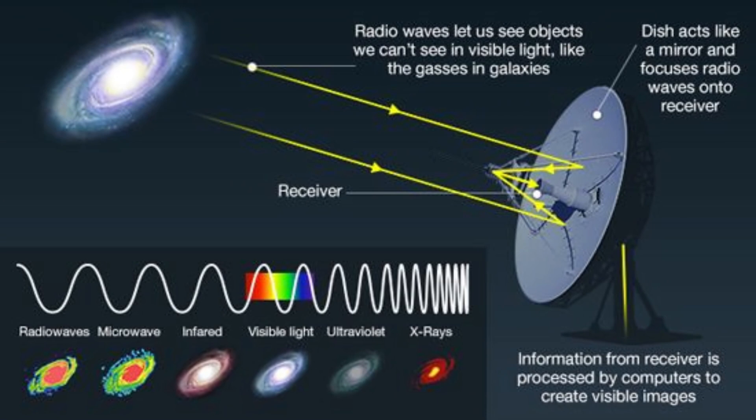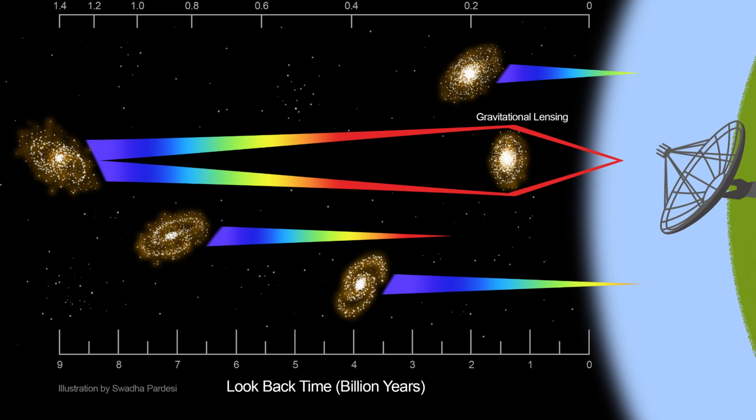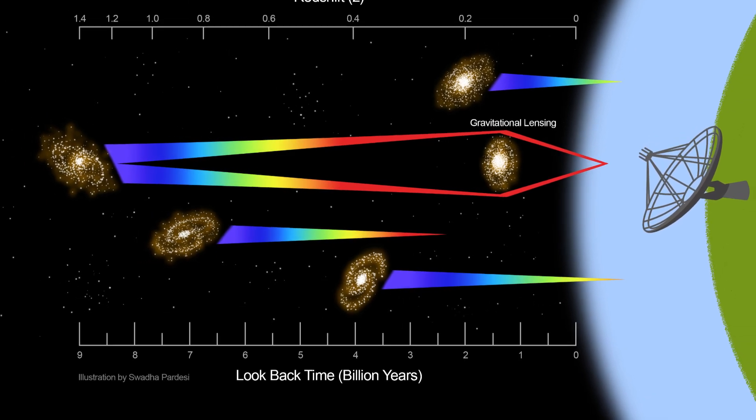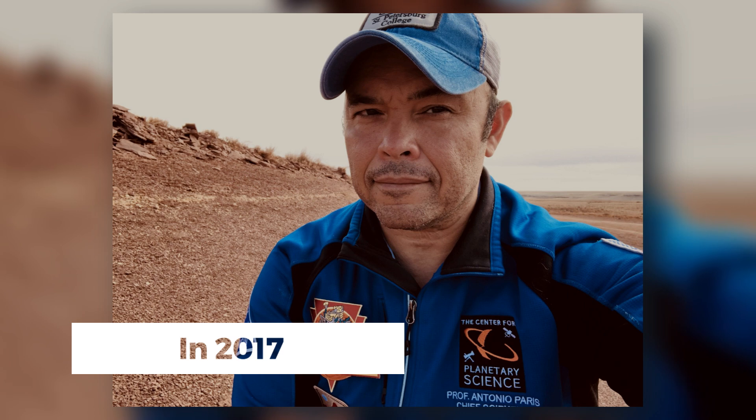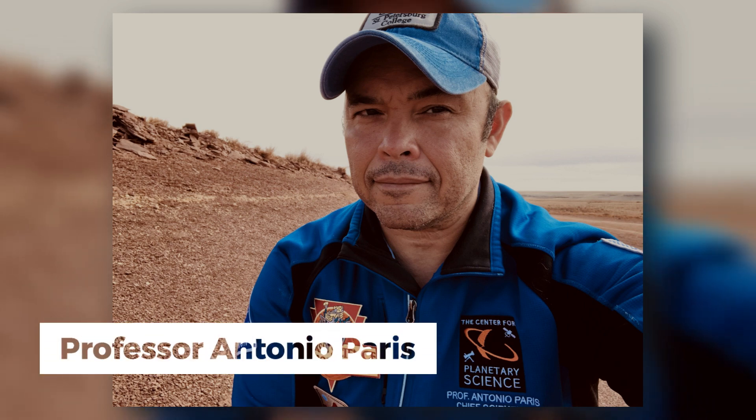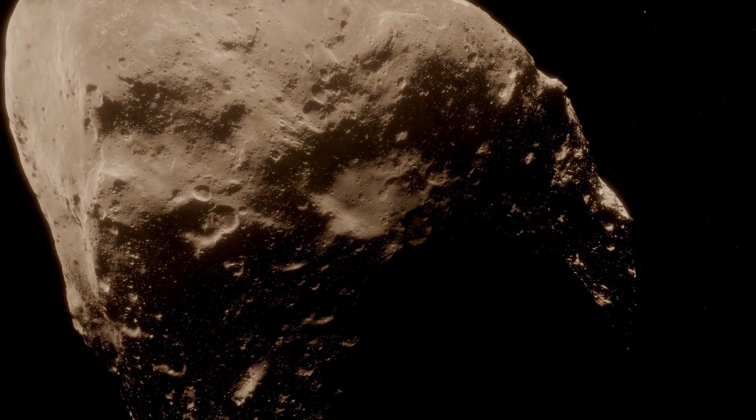The hydrogen line in the field of radio astronomy represents a distinct wavelength of radio waves emitted by hydrogen gas in space.